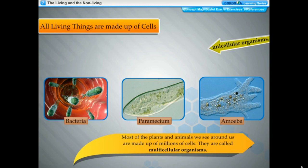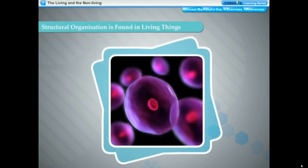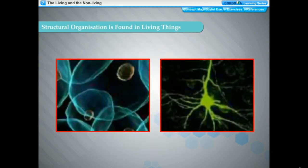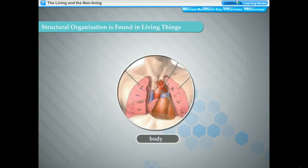In multicellular organisms, cells are not alike — they are of different sizes, shapes, and perform different functions. Structural organization is found in living things. Cells in multicellular organisms are organized into specialized groups which perform specific functions. A group of similar cells that perform a particular function is called a tissue. Different groups of tissues work together to perform a function; a group of tissues which work together to perform a particular function in the body is called an organ.